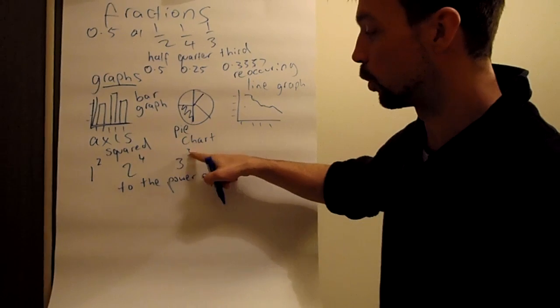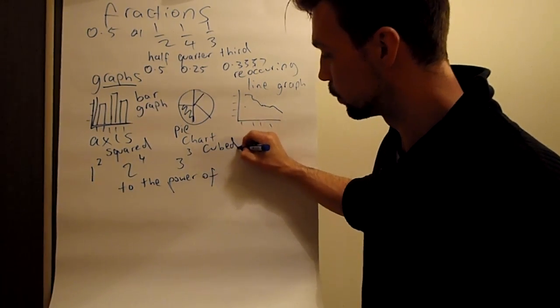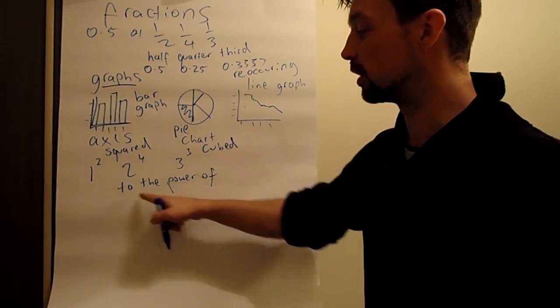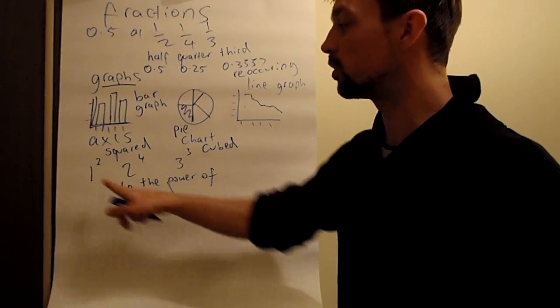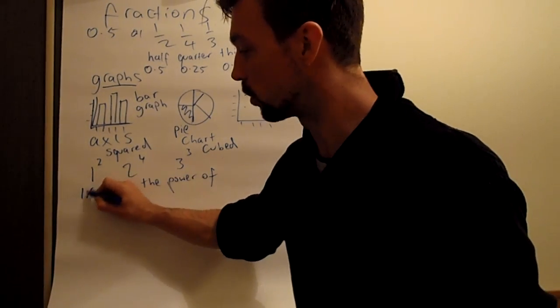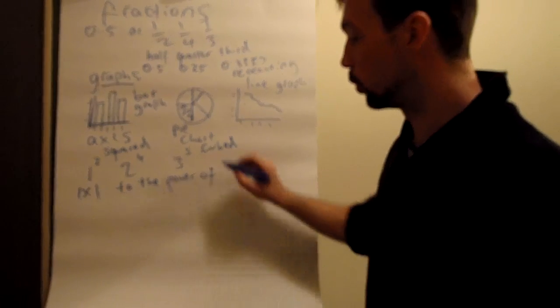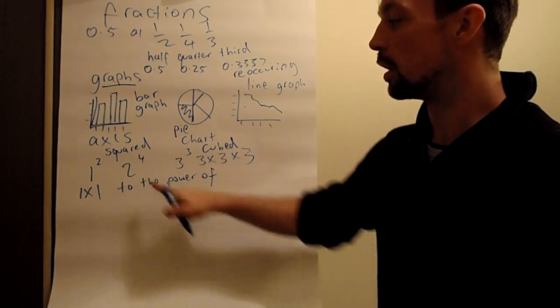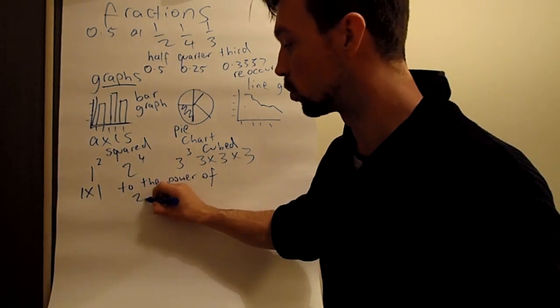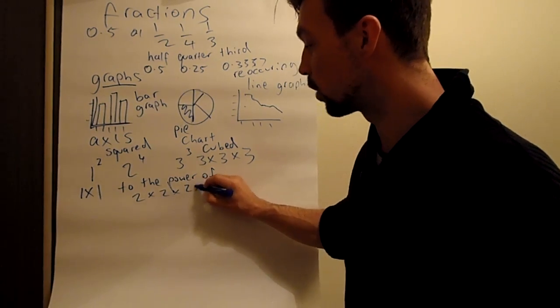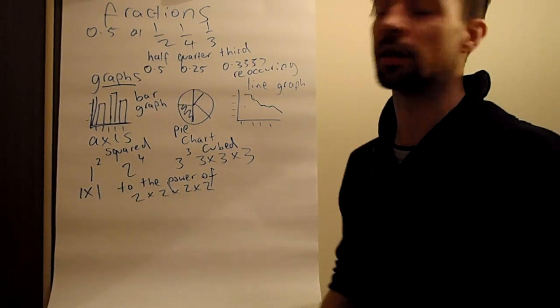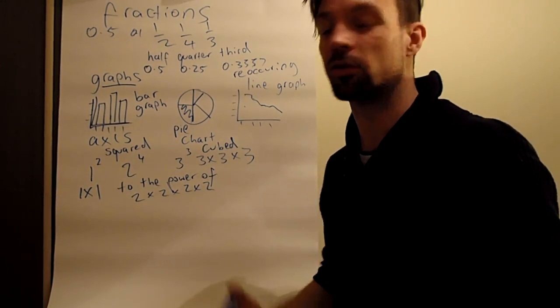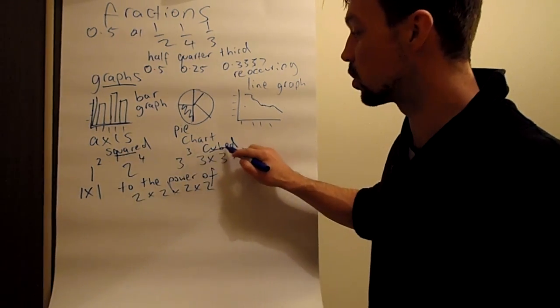When it's two, it's squared. When it's three, it's cubed. And anything above three, for example four, five, six, is to the power of. So this is one squared and it means one times one. This is three cubed, so it means three times three times three. And so three to the power of five, four to the power of six, ten to the power of 100. It goes up from there. So we have squared and cubed.